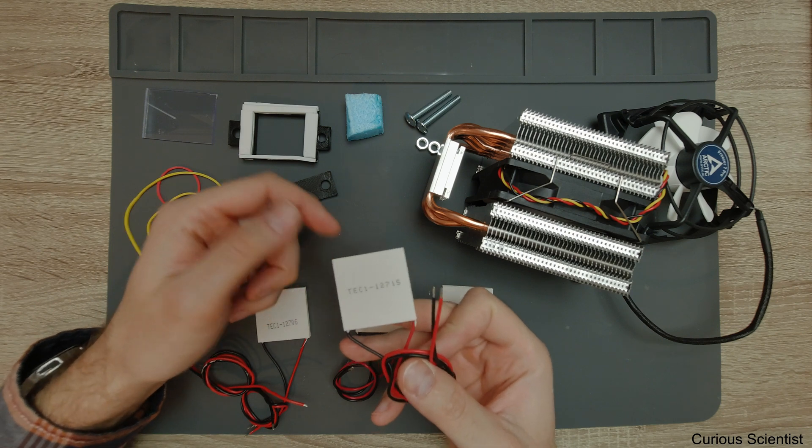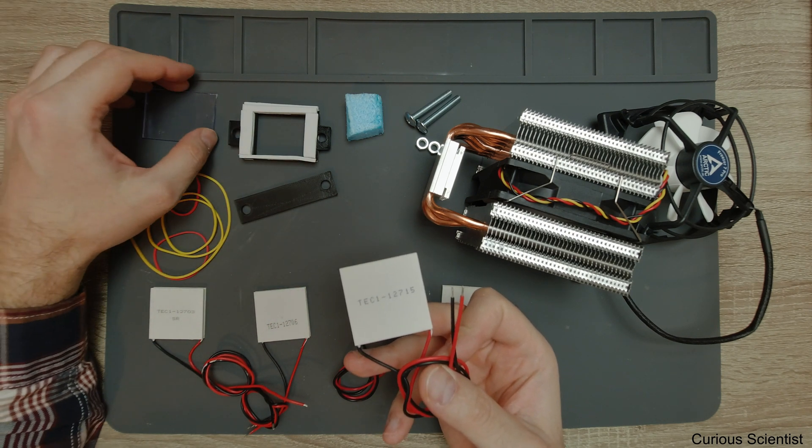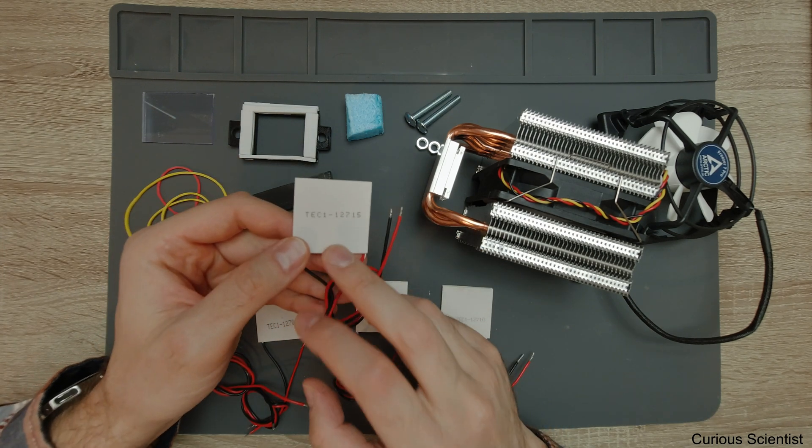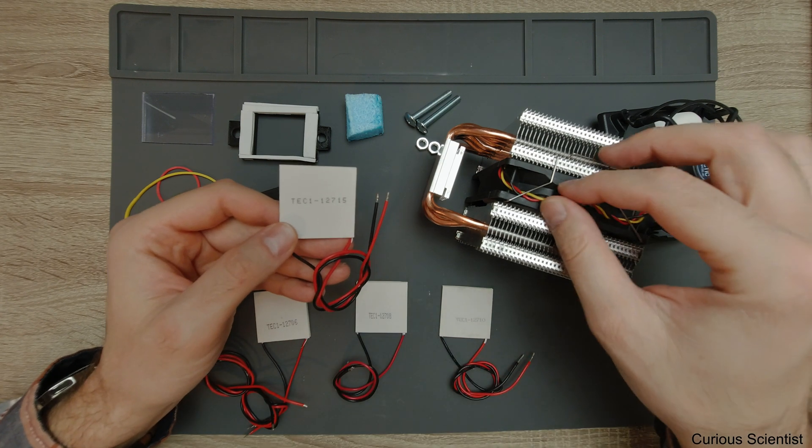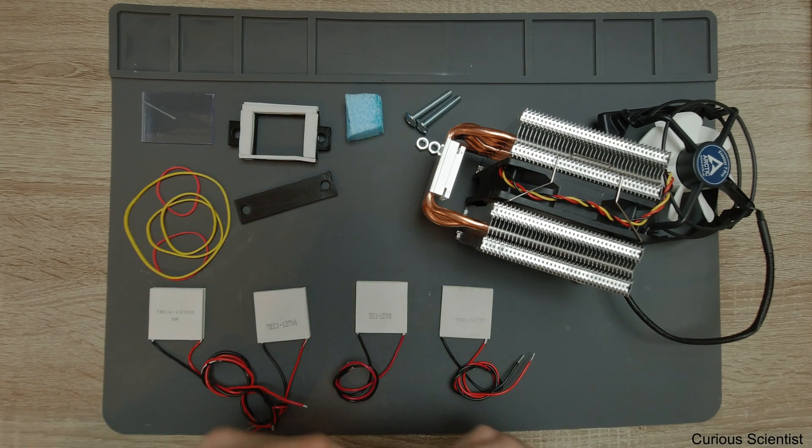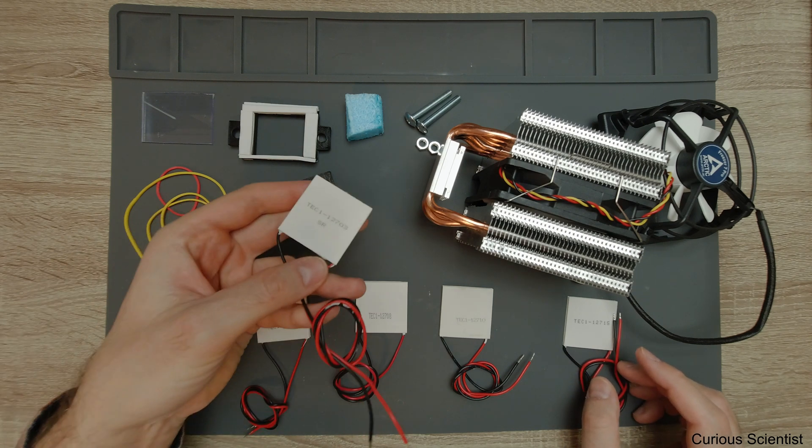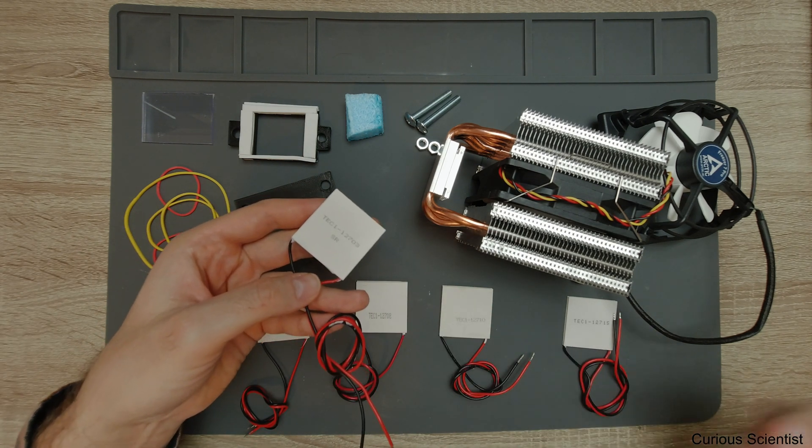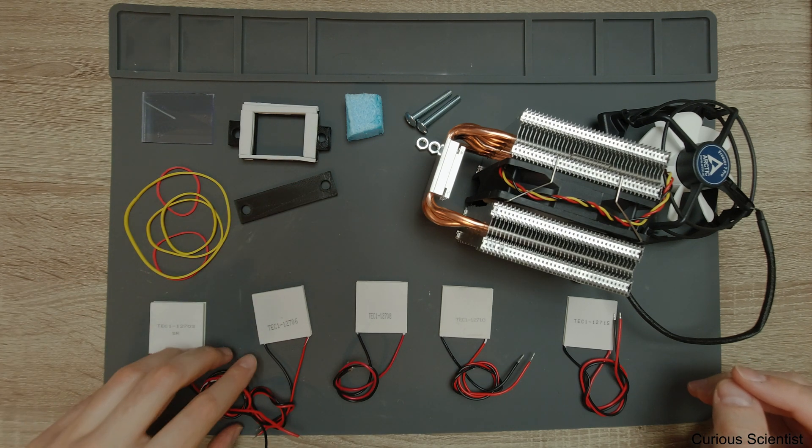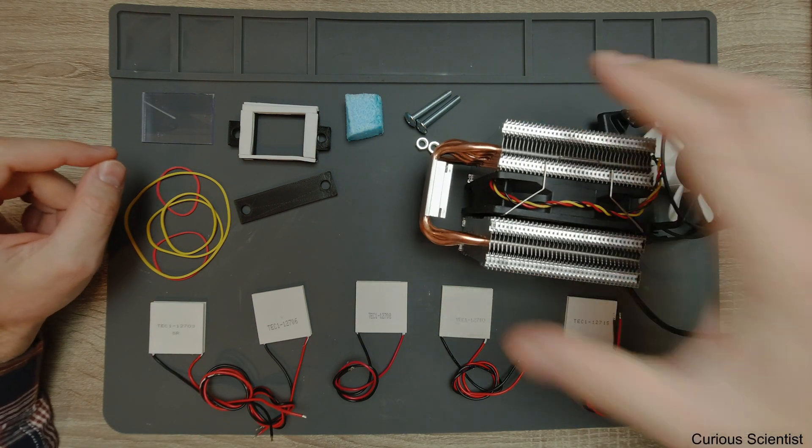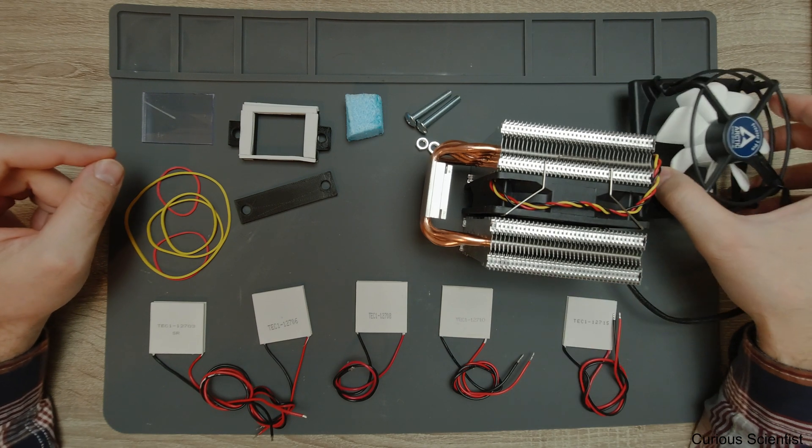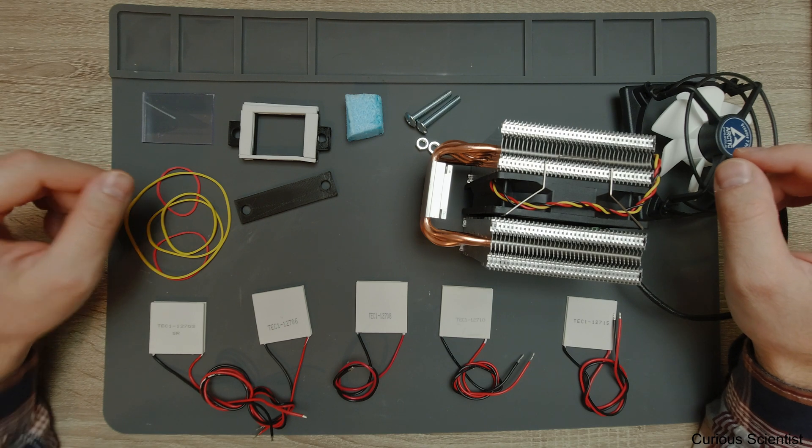This thing is rated to 120 or 130 watts of TDP. With the TEC 12715 we have somewhere around 130 to 140 watts. If we run this on full power, which we will not because of the Joule heating, this should be on the limit of this cooler. With the three ampere version at around 15 volts, that's 45 to 50 watts, which should be no difficulty.